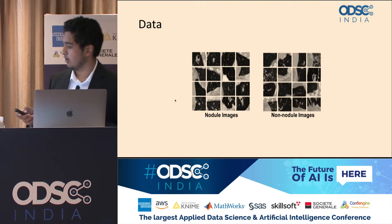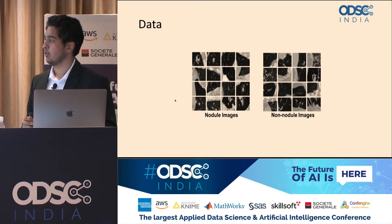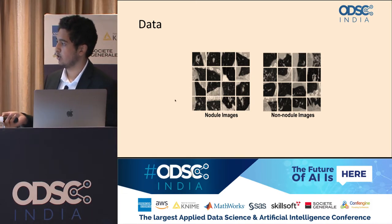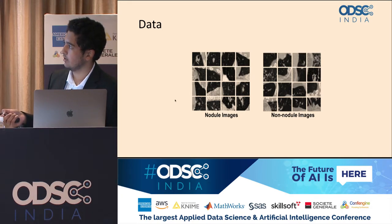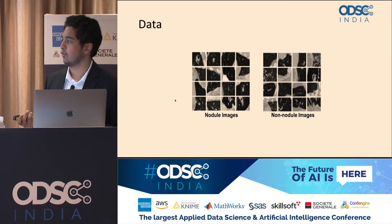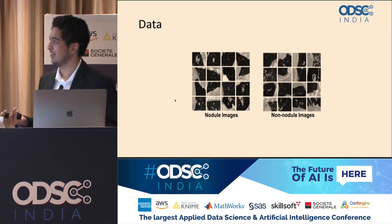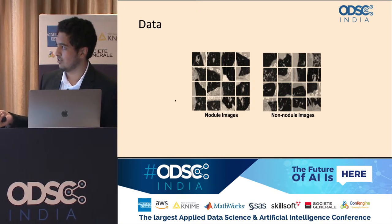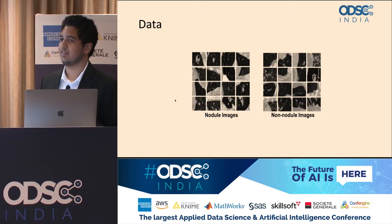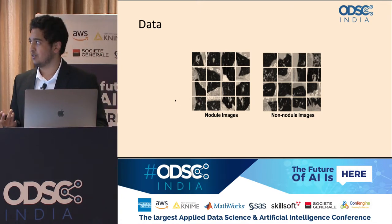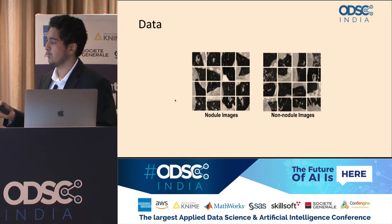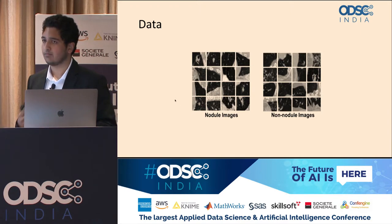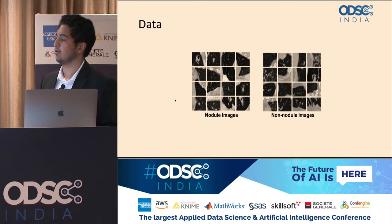The data consists of full CT scans chopped up into regions identified as nodule or non-nodule. It's kind of hard to tell what exactly is shown in some of these images — even experienced people struggle — and that's where the problem lies. Some images show an amorphous blob that's hard to classify, illustrating the problem of false positives as well as the problem of not even detecting the nodule. These are twin problems being addressed using the deep learning approach.